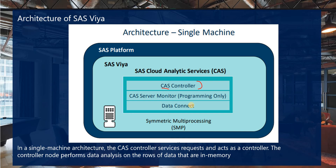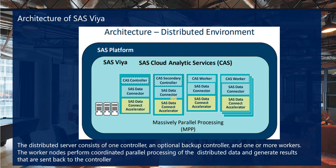The SAS data connector is used to configure connections to data sources such as existing SAS datasets, Teradata, Hive, and Hadoop. The single machine uses available CPUs and threads to speed up analysis, but in-memory analytics and distributed server features are not available. Single machine servers cannot load data into memory in parallel — processing happens one step at a time, unlike the distributed architecture.